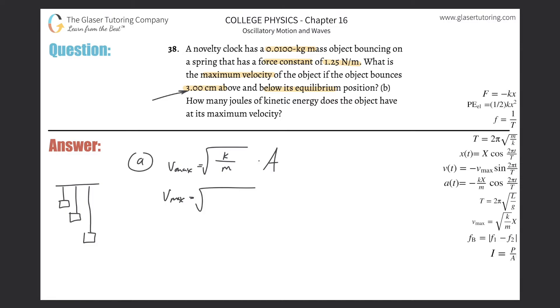So now the maximum velocity is simply just a plug in. It's going to be equal to the square root of the force constant, which they told us was 1.25, divided by the mass, 0.01, times that amplitude. Now this centimeter value has to be converted into meters, so just take that and multiply it by 10 to the minus 2.